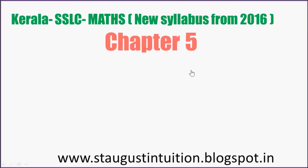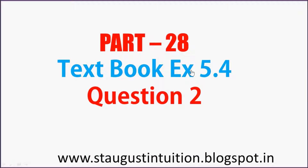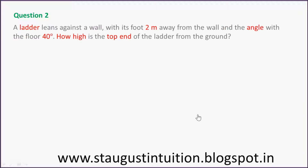Let's start chapter 5, Part 28. Textbook exercise 5.4, question number 2. A ladder leans against a wall with its foot 2 meters away from the wall and the angle with the floor is 40 degrees. How high is the top end of the ladder from the ground?